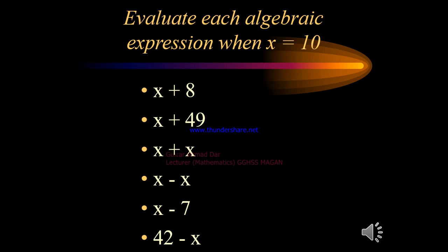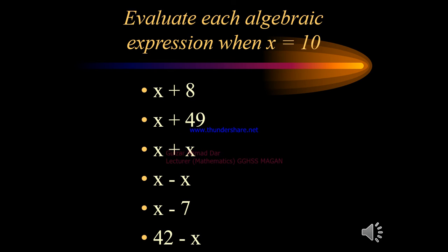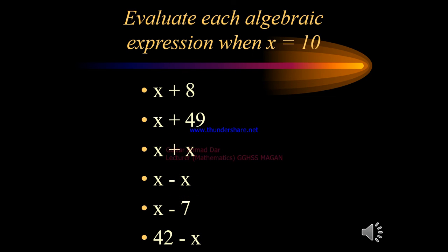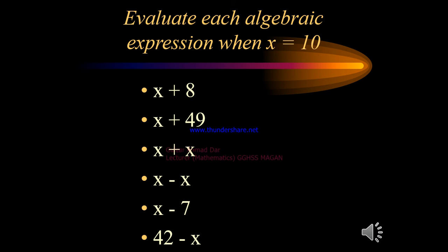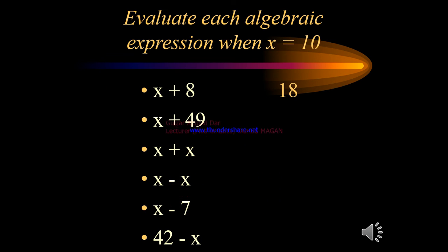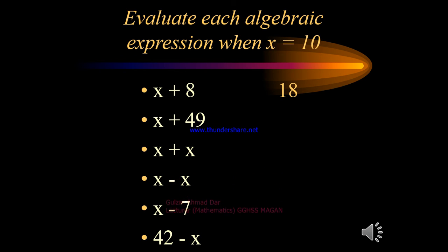Now let's evaluate each algebraic expression when x equals 10. We substitute the given number in place of the variable. For the expression x plus 8, substituting x equals 10, the result is 18. For x plus 49, substituting x equals 10, the result is 59.